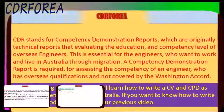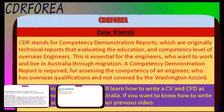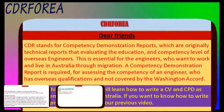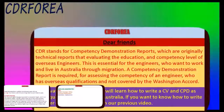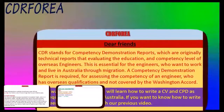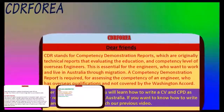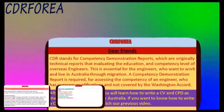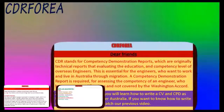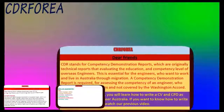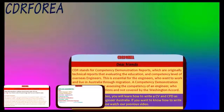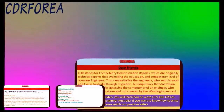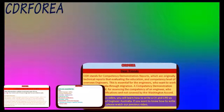CDR stands for Competency Demonstration Report, which are originally technical reports that evaluate the education and competency level of overseas engineers. This is essential to engineers who want to work and live in Australia through migration. A Competency Demonstration Report is required for assessing the competency of an engineer who has overseas qualifications and is not covered by the Washington Accord.